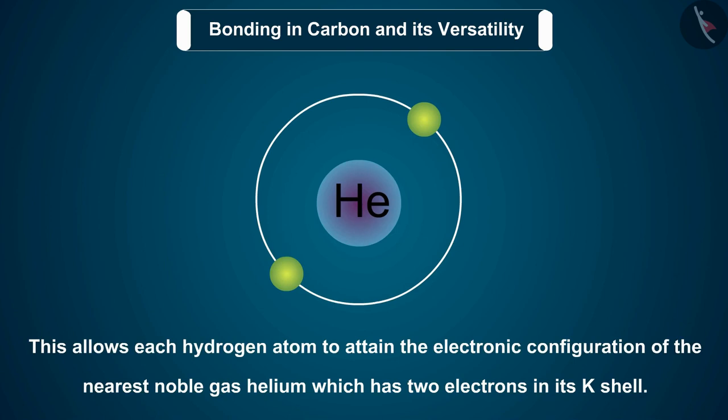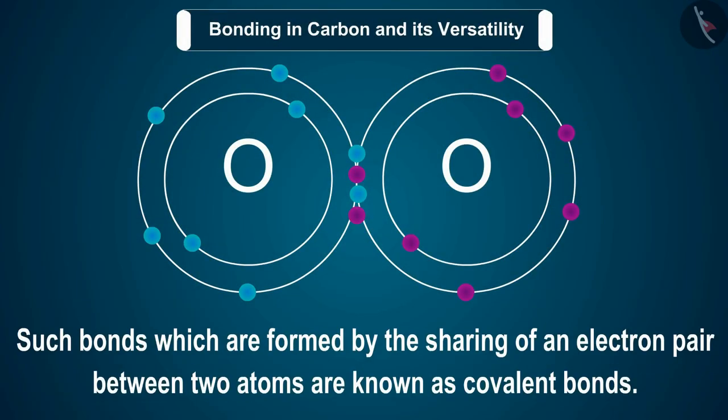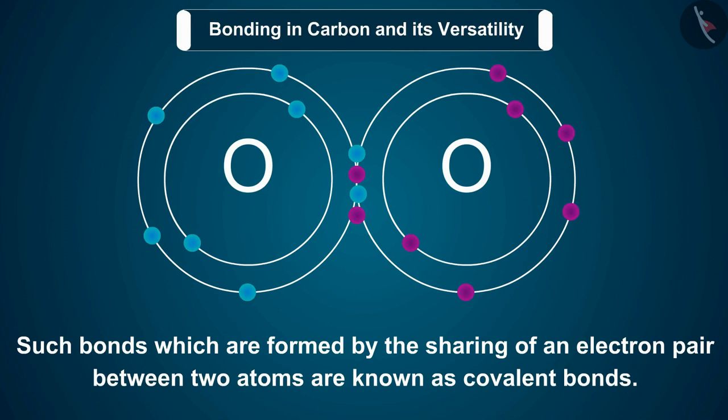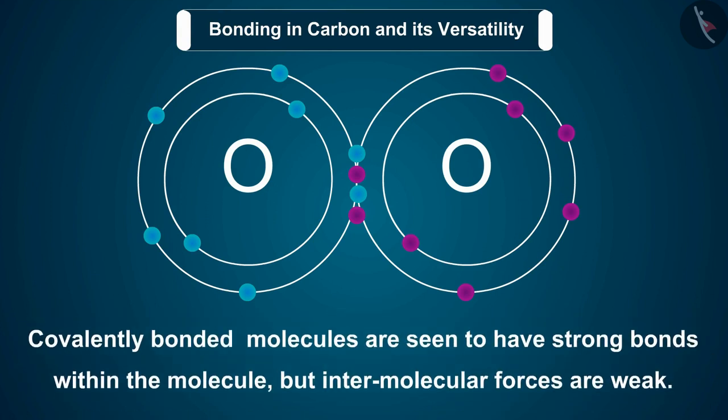Such bonds which are formed by the sharing of an electron pair between two atoms are known as covalent bonds. Covalently bonded molecules are seen to have strong bonds within the molecule, but intermolecular forces are weak. This gives rise to the low melting and boiling points of these compounds.